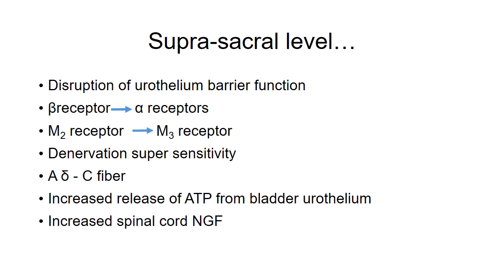Similarly, M2 receptor predominance is changed to M3 receptors. The patient will have denervation supersensitivity — when smooth muscle is denervated, its sensitivity to neurotransmitters increases. There is also a change from small myelinated A-delta fibers to unmyelinated C fibers. Normally A-delta fibers are active and C fibers are silent, but in spinal cord injury the C fibers become active. There is also increased release of ATP from bladder urothelium and nerve growth factor from the spinal cord.